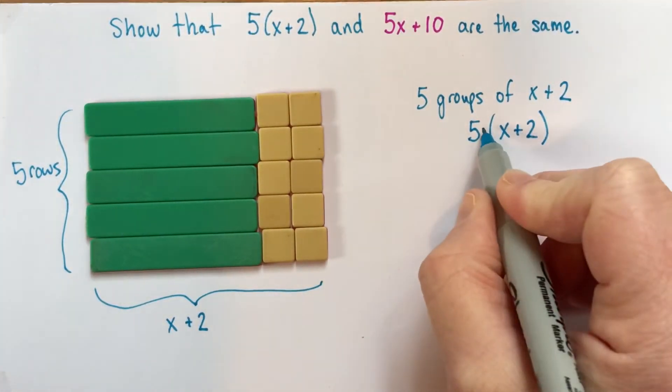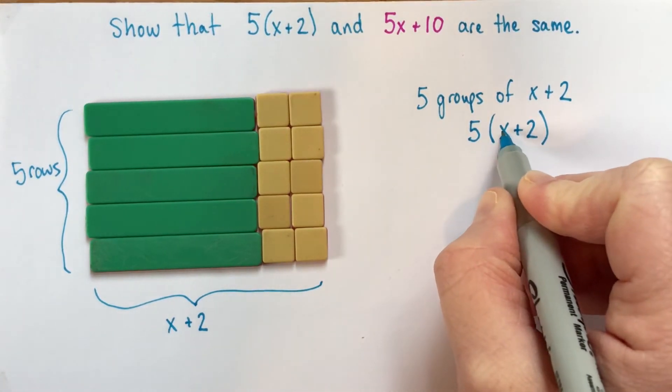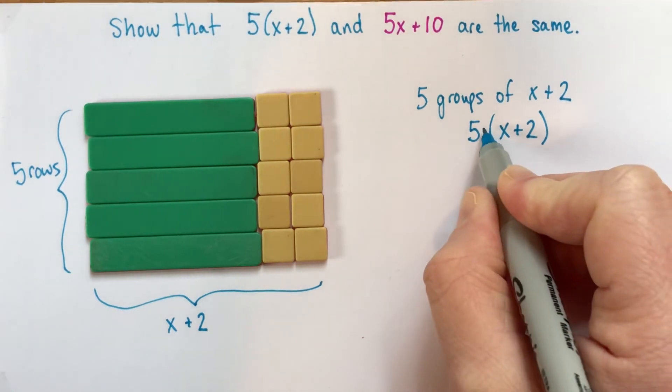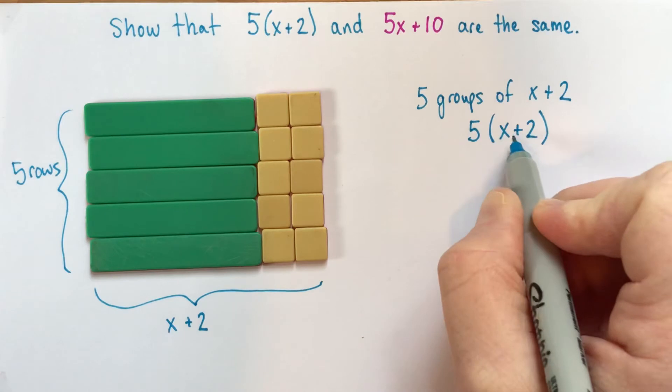And we don't need to write a multiplication sign. You're welcome to if you want, as long as you don't make it look too much like an x. But you don't need to, as long as you've got the brackets there. So that means 5 times x plus 2.